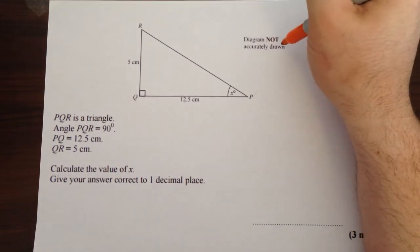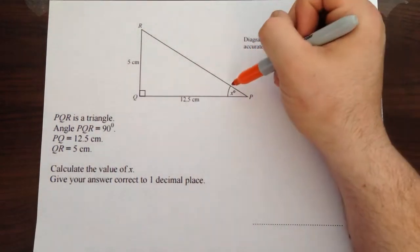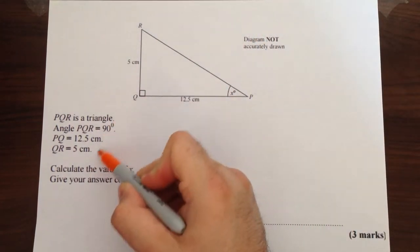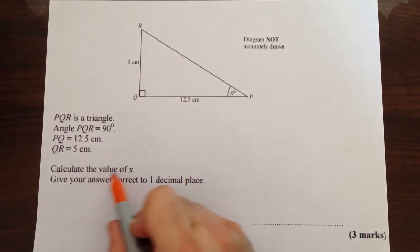We're told the diagram's not drawn accurately, which means we can't use a ruler to measure that length and we can't use a protractor to measure that angle. So that information's summarized here. We've been asked to calculate the value of X and give our answer correct to one decimal place.